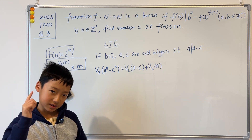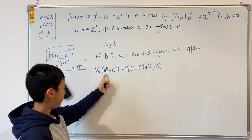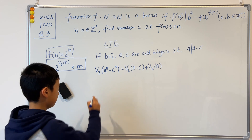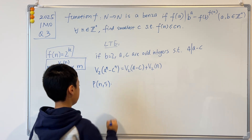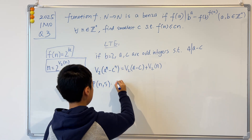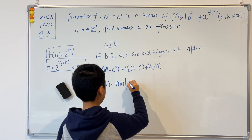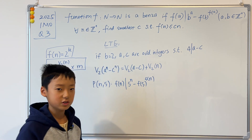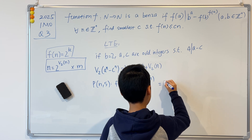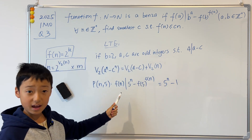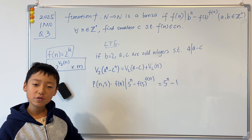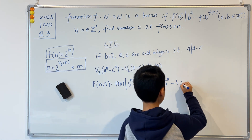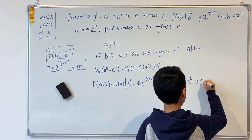This makes us think: why not let a = 5 and c = 1? Define Property(n, 5): f(n) divides 5^n − f(5)^(f(n)). We know f(5) = 1, so this equals 5^n − 1. Since f(n) = 2^k, we know 2^k must divide 5^n − 1, which means 2^k ≤ 5^n − 1.